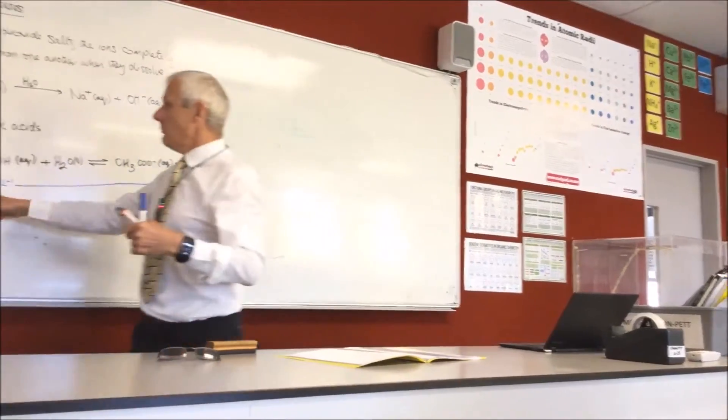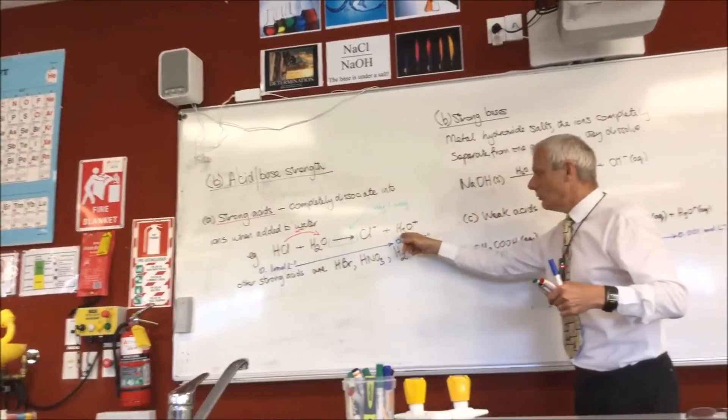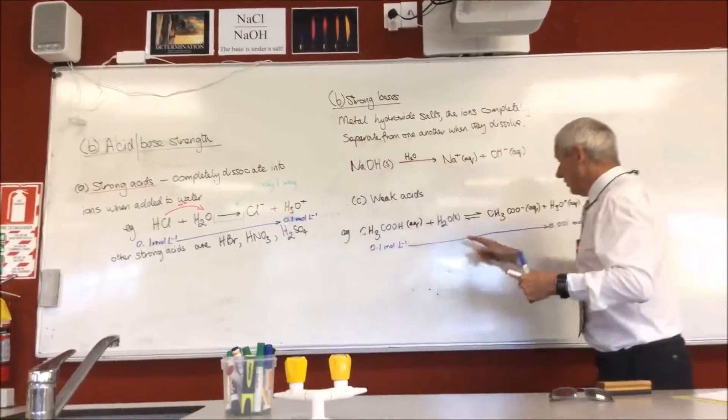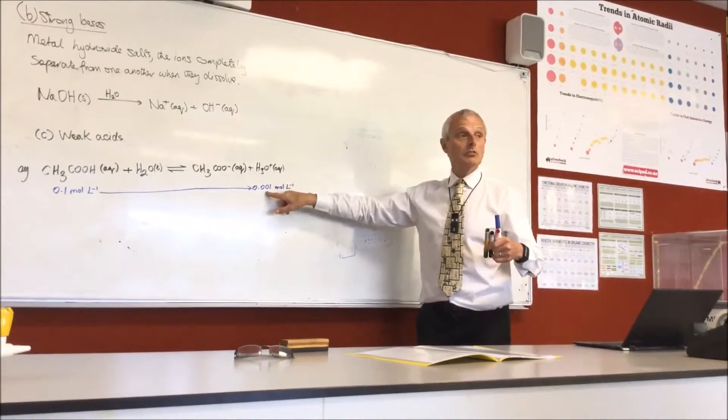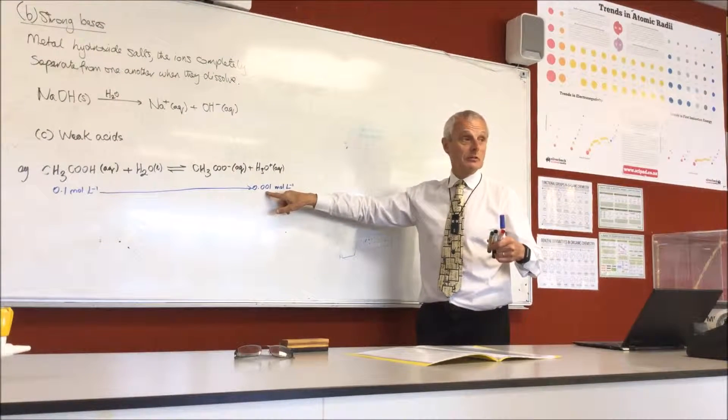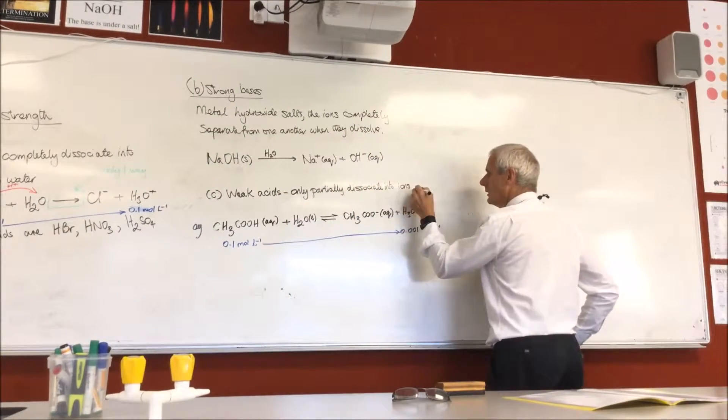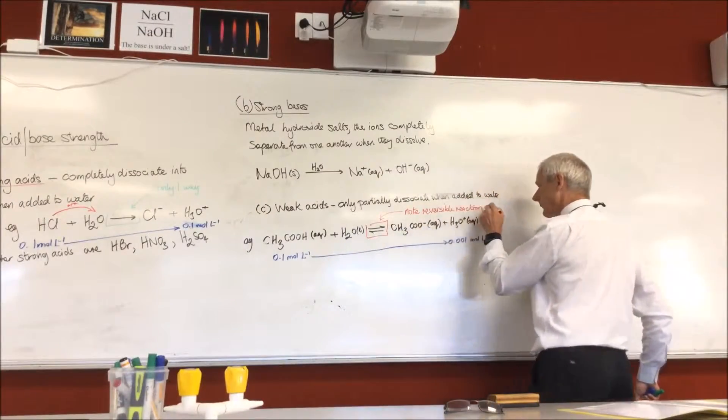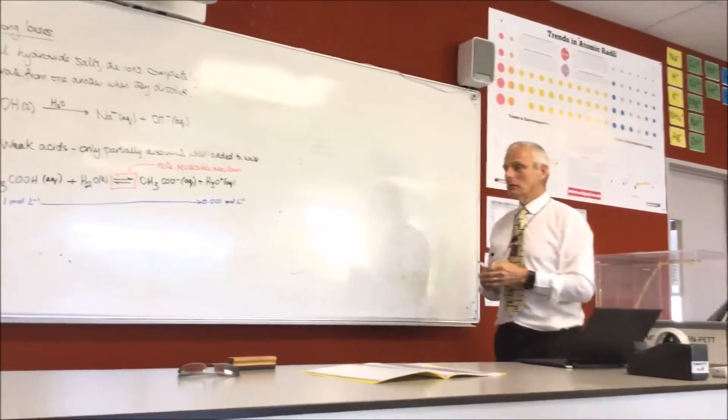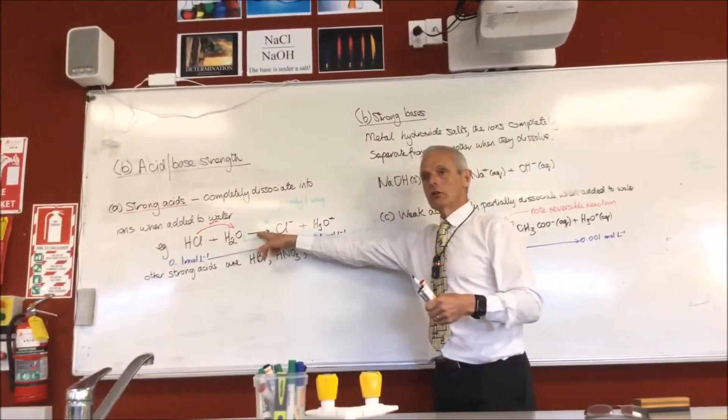So, you've got 0.1 mol per litre that's both being dissolved up, but this one's completely forming 0.1 mol per litre of this. This one, however, is only giving you 0.001 because most of them are not dissociated. And this is where people make the mistake. They'll often, because they're frantically writing an answer out, always use one of these arrows.